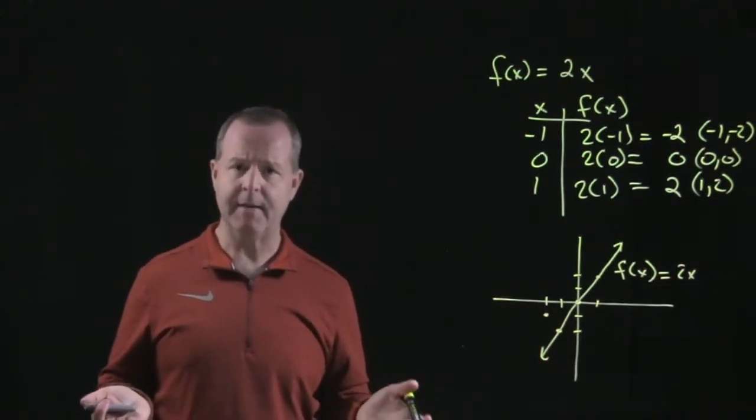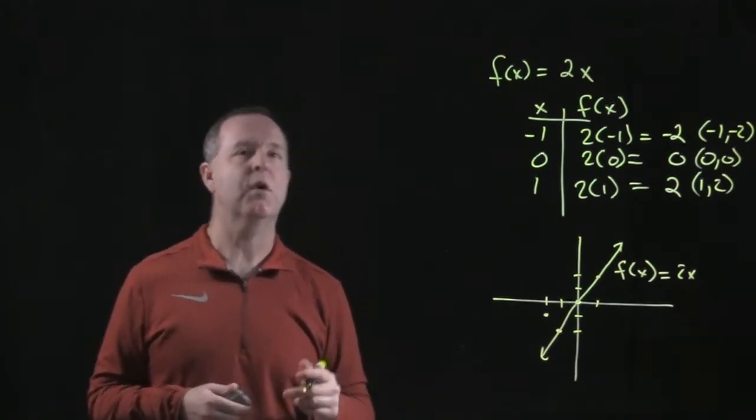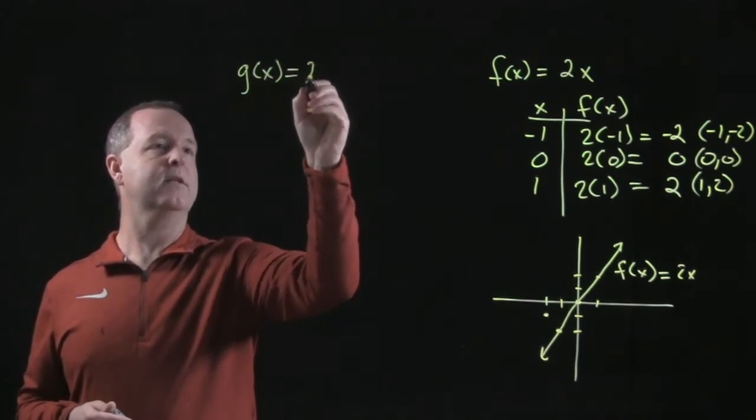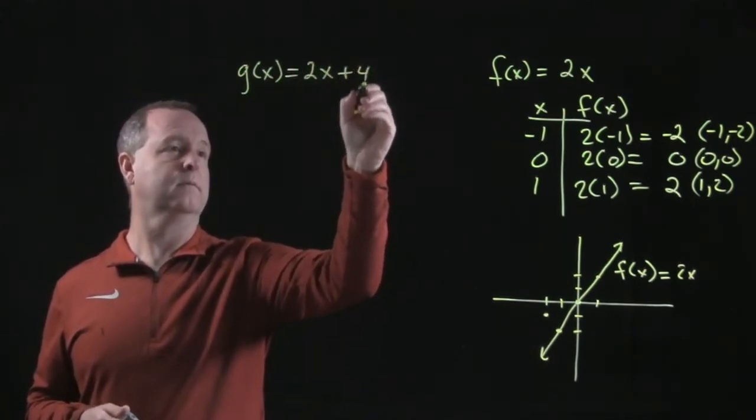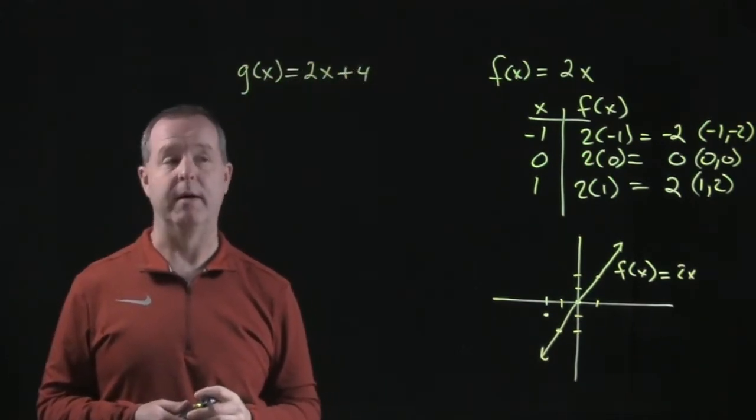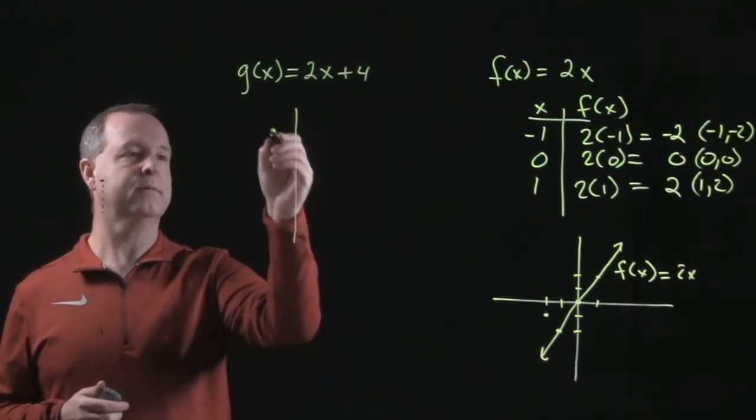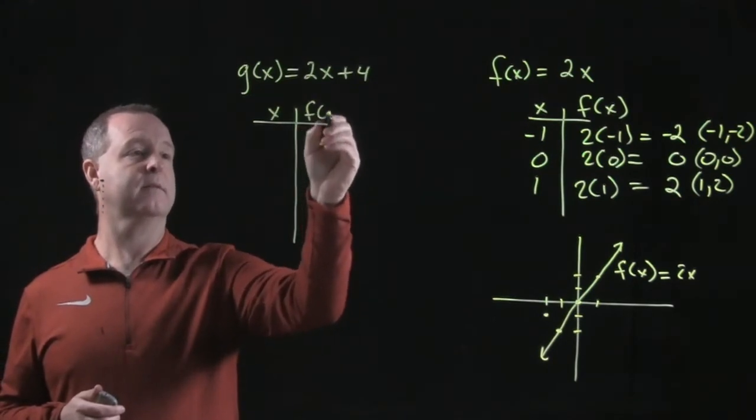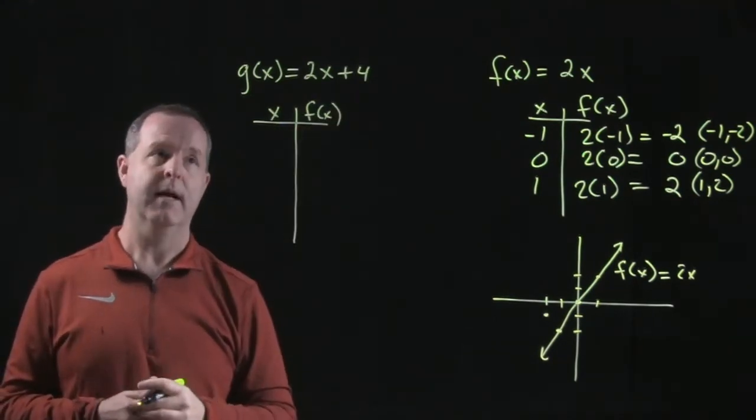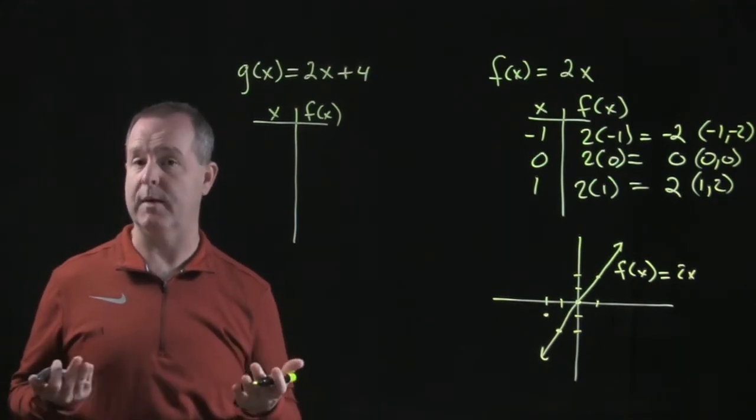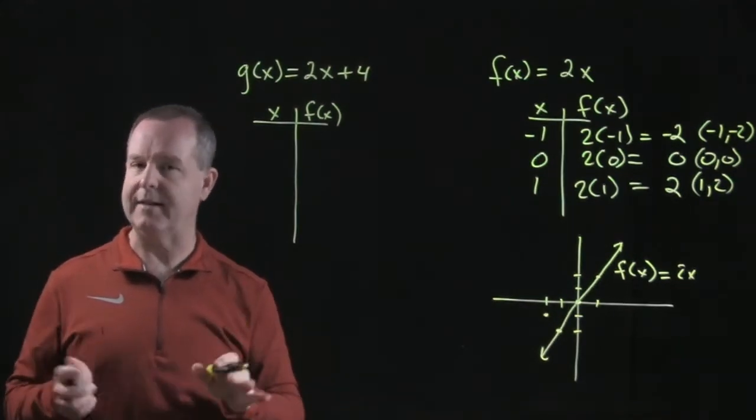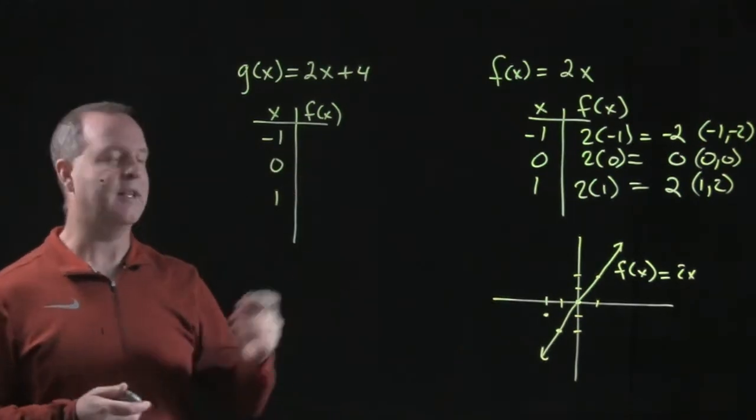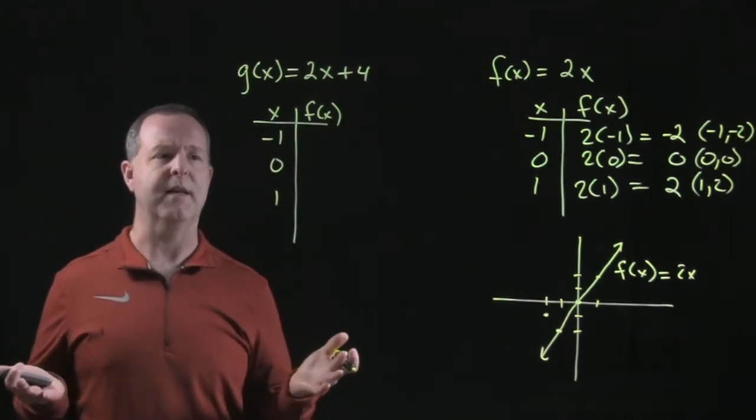All right, kind of got the idea of that. Well, let's try another one. Let's try g(x). And let's say that's 2x plus 4. How would we graph that one? Well, likewise, we would draw our table, our x and our g(x), our input and our output. And let's imagine a couple of inputs that we want to put in. Again, we need to have at least three points when we're graphing so we don't make a mistake. Again, I like to choose the same points, but you can choose anything you want.